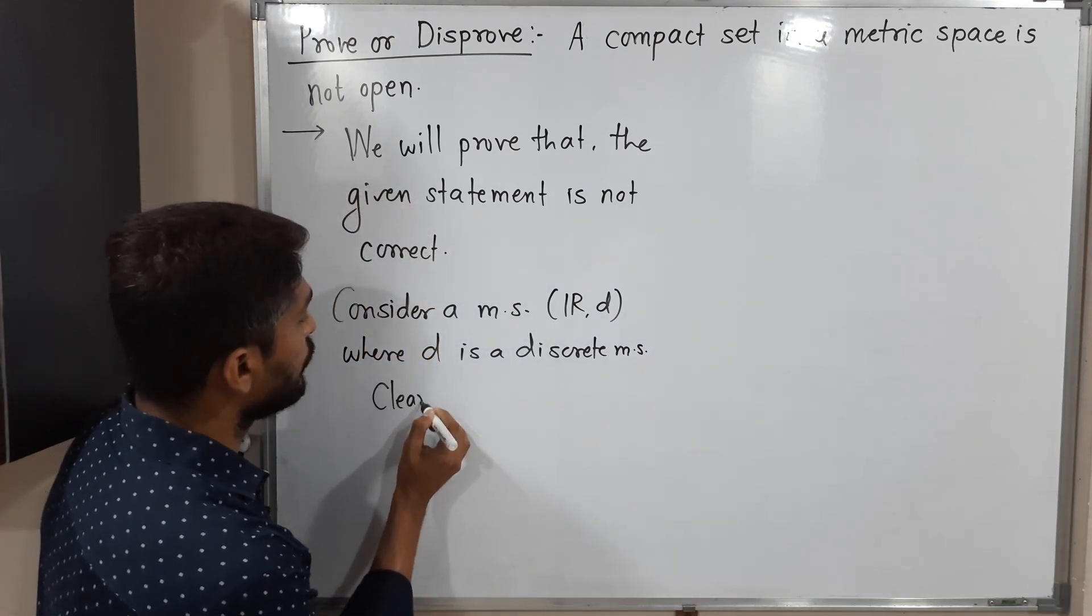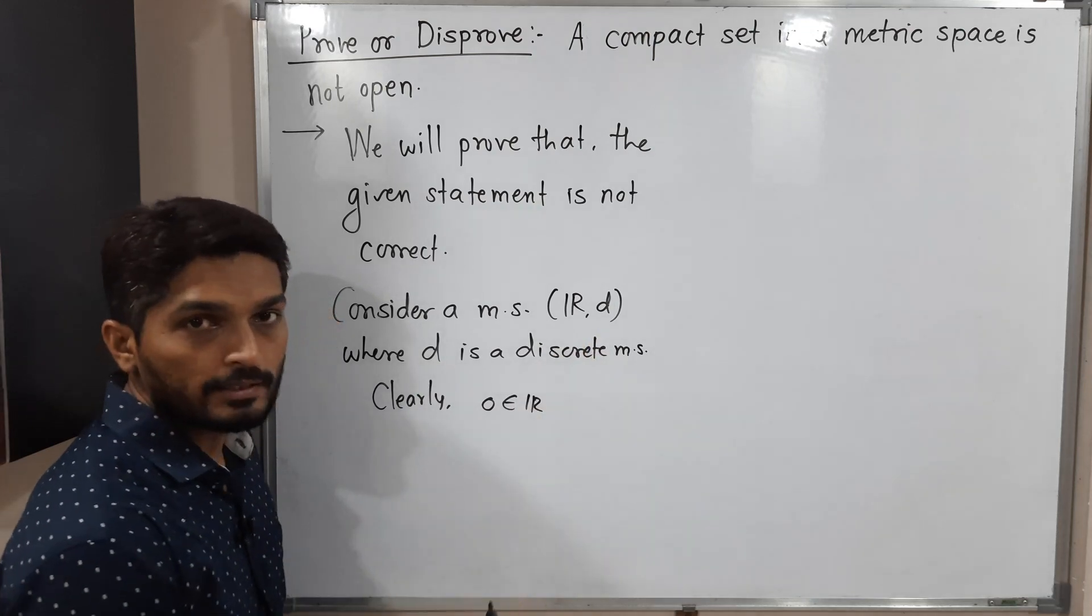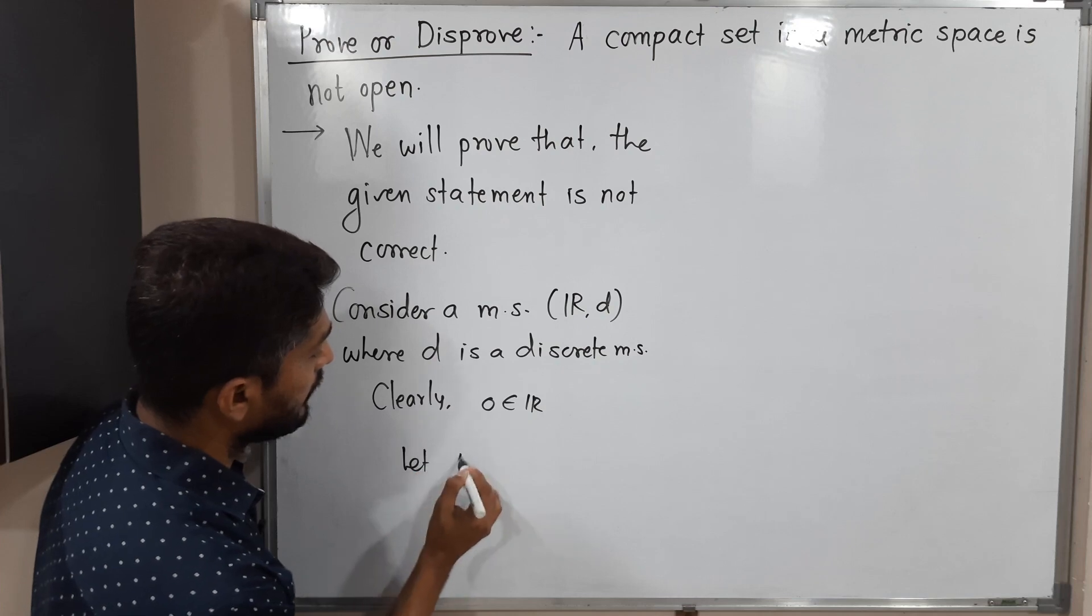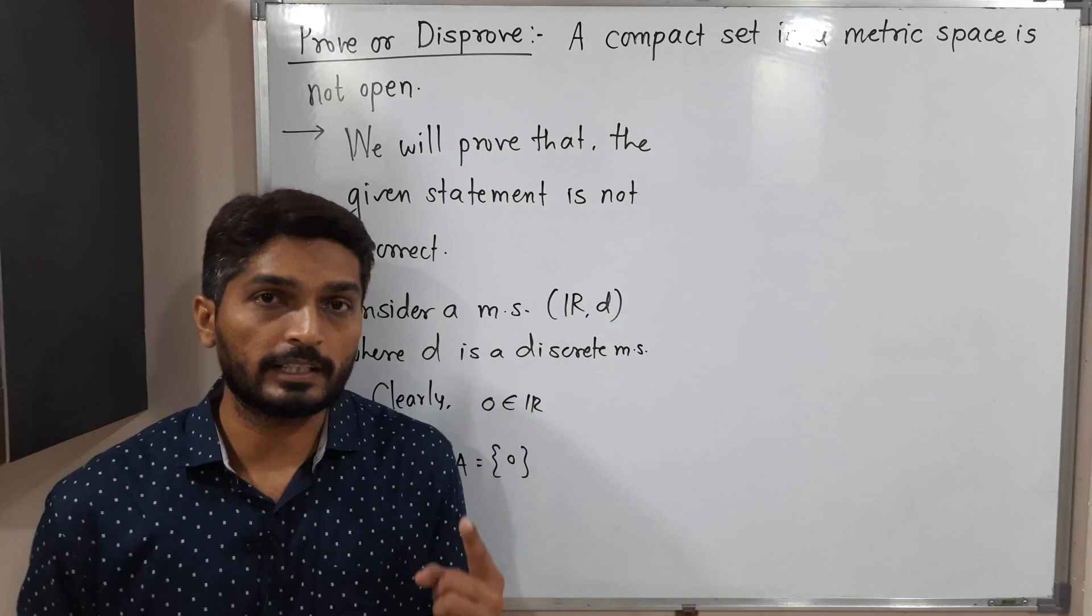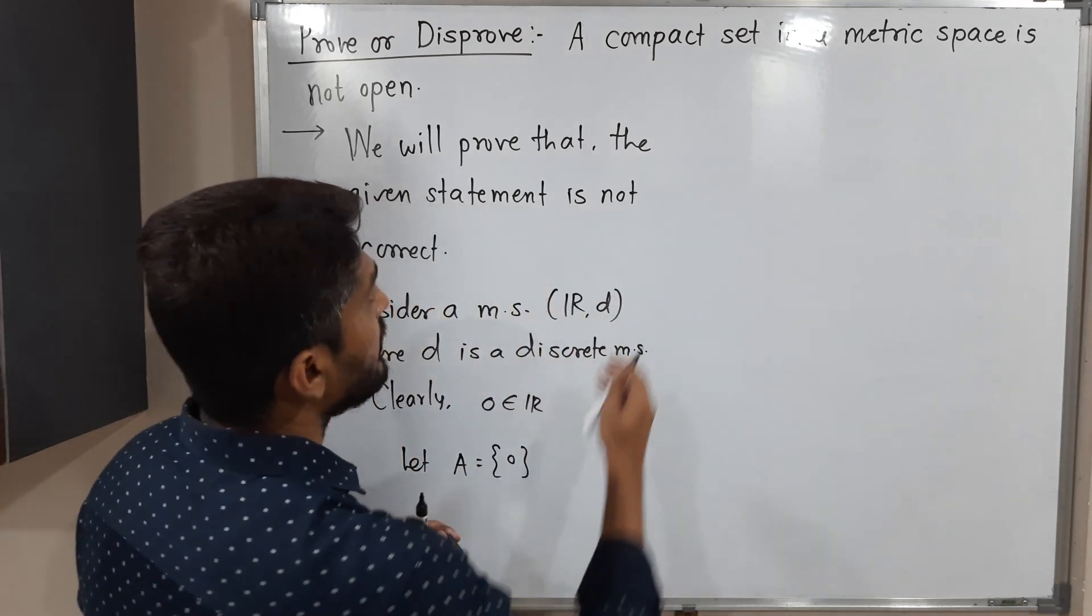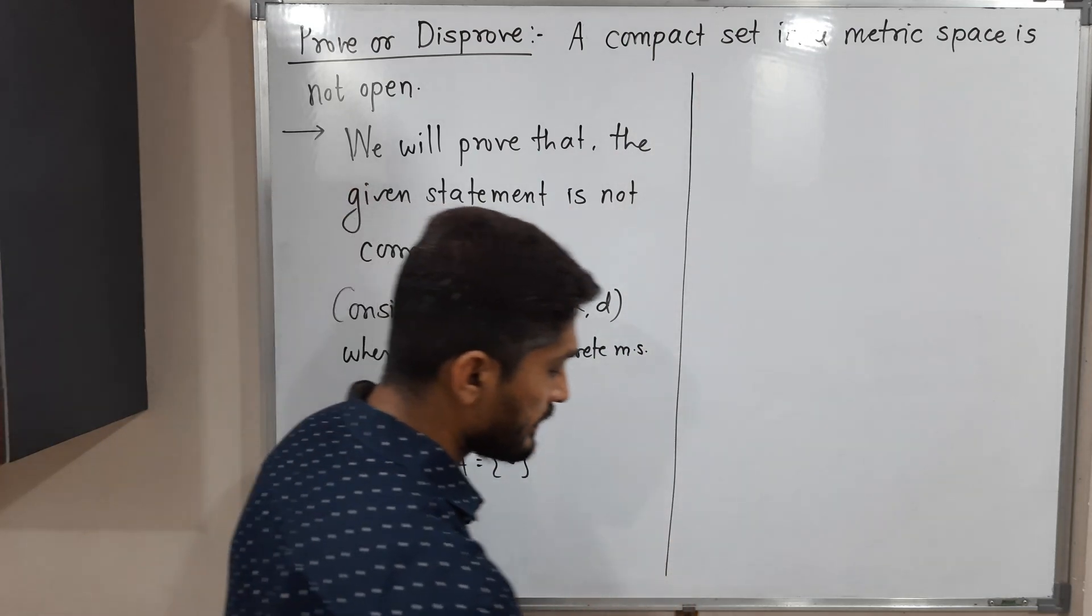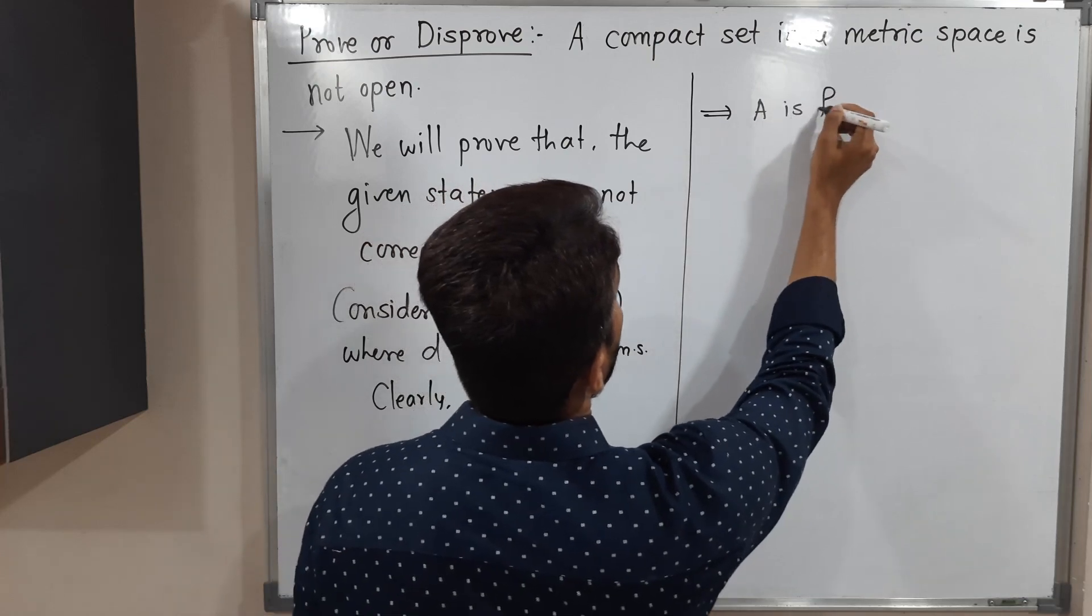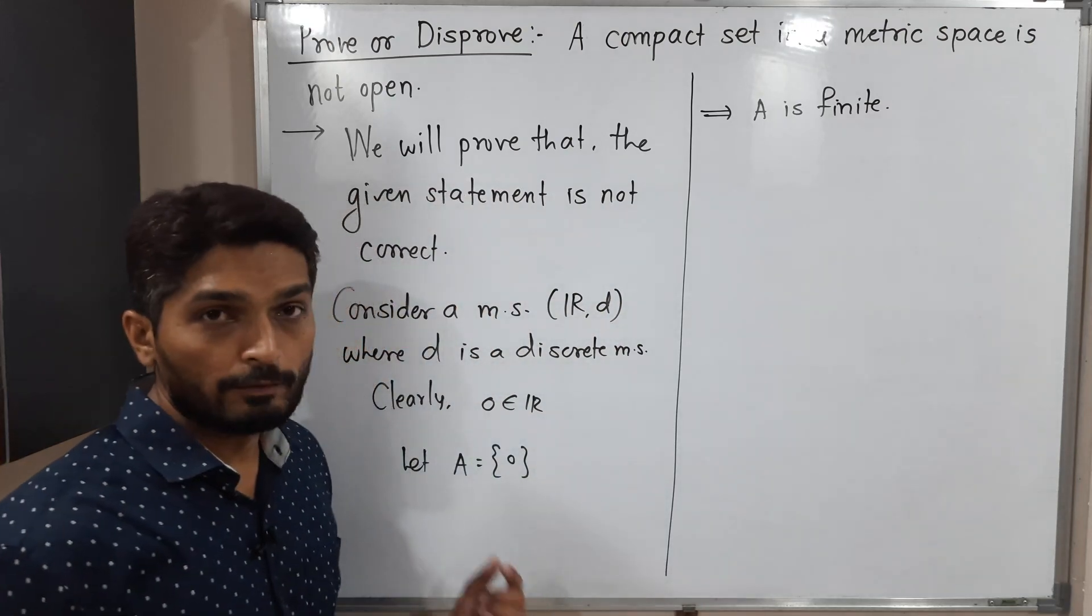Clearly, zero belongs to R. We have the real line, so obviously zero is a real number. Let A equal the singleton {0}. So I am considering a set which has only one element, that is zero. Therefore, we can say A is a finite set since it has only one element.